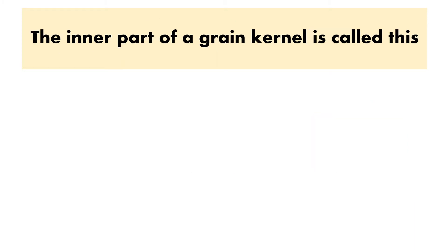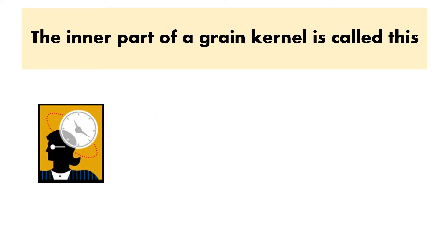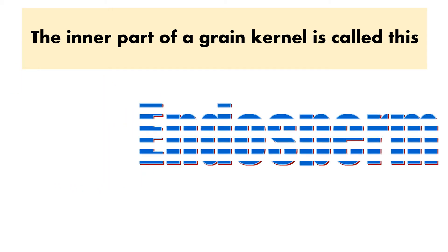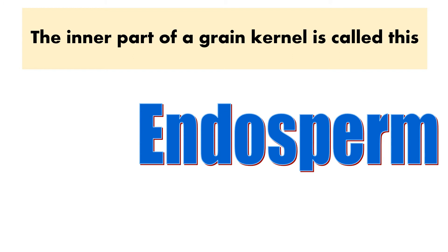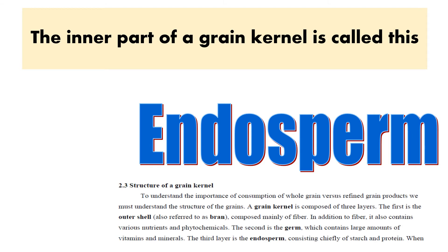The inner part of a grain kernel is called what? Not only should you be familiar with the inner part, but all three parts of the grain kernel: the outer shell, sometimes referred to as bran, the germ, and the endosperm. All of these terms are in bold in your course pack.